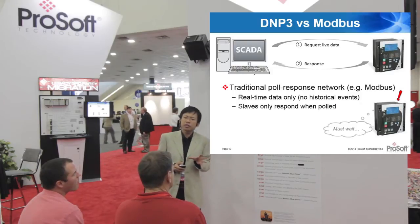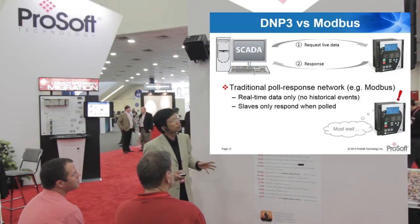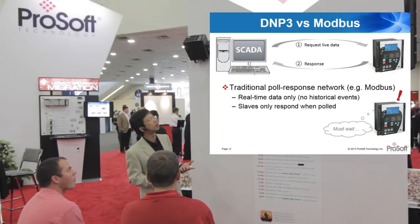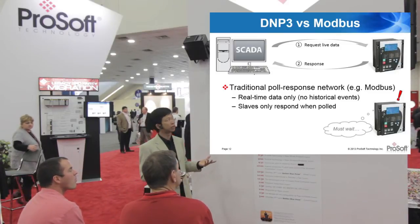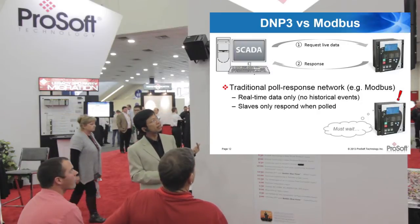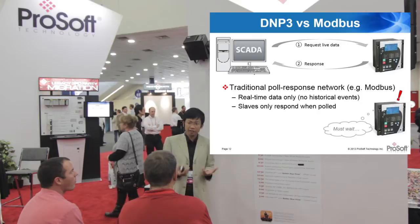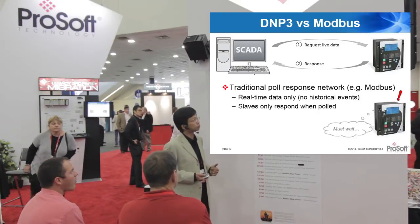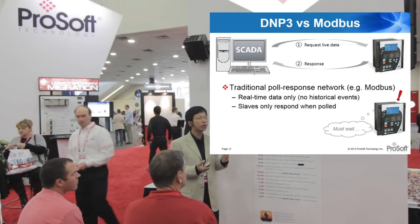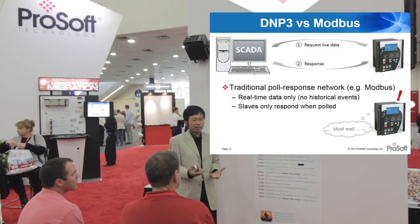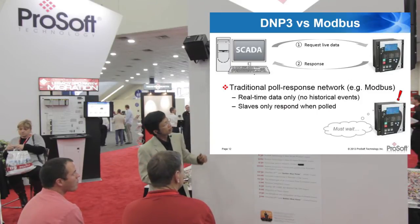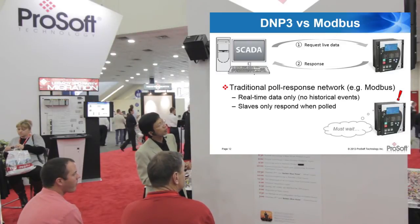Now let me get into a bit of detail about why DNP3 is so popular in the electrical industry. You've probably heard about a simple network like Modbus — probably the most popular third-party network out there. Modbus is a traditional poll-response network: a master polls the slaves, and when the slaves get polled, they reply with live data. The problem is that Modbus devices typically only provide real-time data — they don't provide historical data. Also, devices that aren't being polled don't have a chance to talk; they always have to wait. So if you have an electrical incident — maybe a trip or an overload — Modbus doesn't allow you to know right away, since slaves only respond when polled.